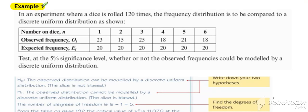If we consider example one, we've got our observed and we've got our expected. We want to test at the 5% significance level whether or not observed and expected are significantly similar enough to represent a discrete uniform distribution.